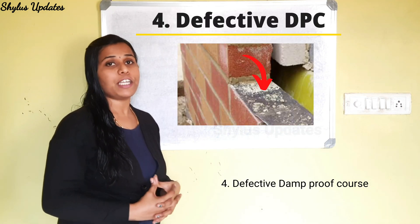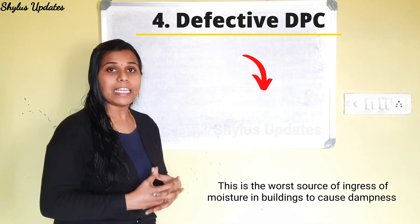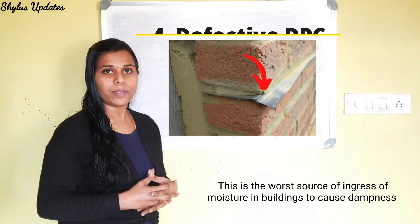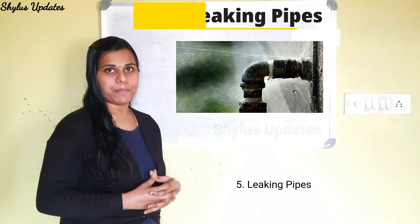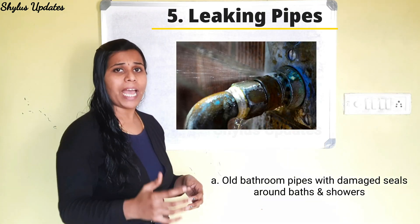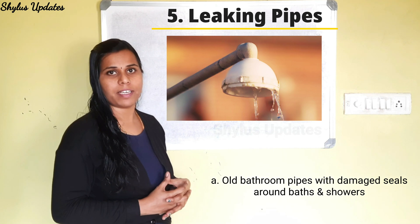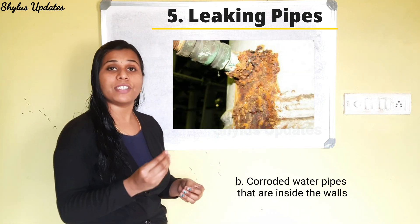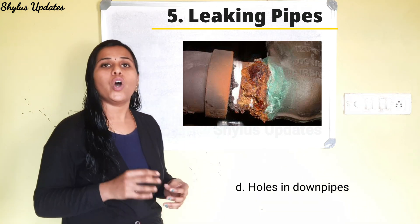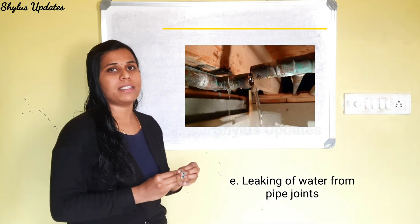Next cause is defective damp proof courses, which is one of the worst sources of ingress of moisture in buildings leading to dampness. Another cause is leaking pipes — this can occur due to old bathroom pipes with damaged seals around baths and showers, corroded water pipes inside walls, rusted down pipes, holes in down pipes, and leaking of water from pipe joints.